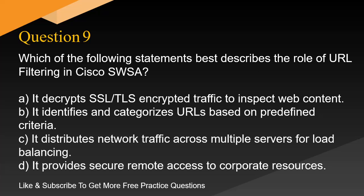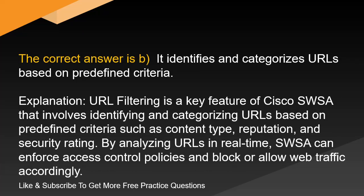Question 9. Which of the following statements best describes the role of URL filtering in Cisco SWSA? A. It decrypts SSL/TLS encrypted traffic to inspect web content. B. It identifies and categorizes URLs based on predefined criteria. C. It distributes network traffic across multiple servers for load balancing. D. It provides secure remote access to corporate resources. The correct answer is B. It identifies and categorizes URLs based on predefined criteria. Explanation. URL filtering is a key feature of Cisco SWSA that involves identifying and categorizing URLs based on predefined criteria such as content type, reputation, and security rating. By analyzing URLs in real-time, SWSA can enforce access control policies and block or allow web traffic accordingly.